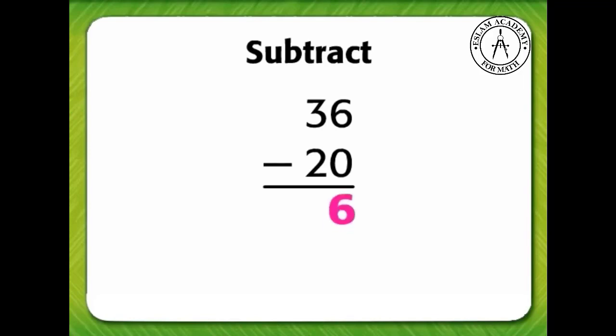6 minus 0 equals 6. 3 minus 2 equals 1. So, 36 minus 20 equals 16.